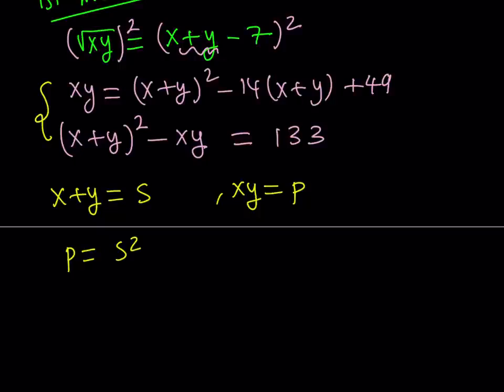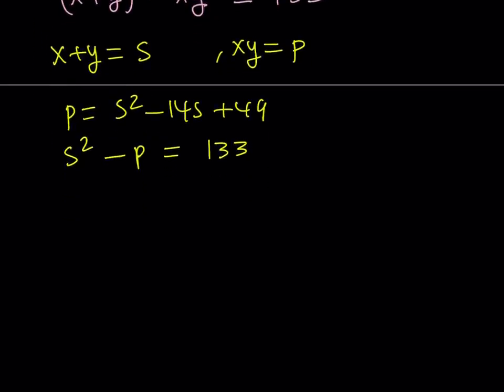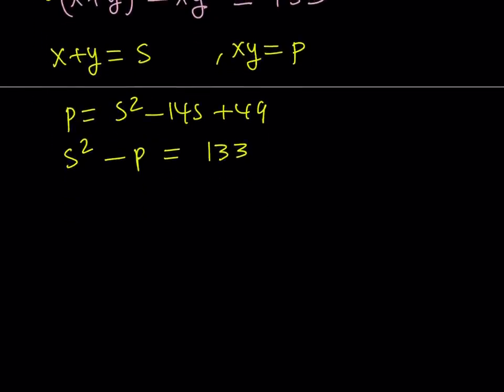p equals s squared minus 14s plus 49. Second equation gives me s squared minus p equals 133. Now, since both of these equations have p as a linear term, there's no squares, as first powers, we can just set them equal to each other.